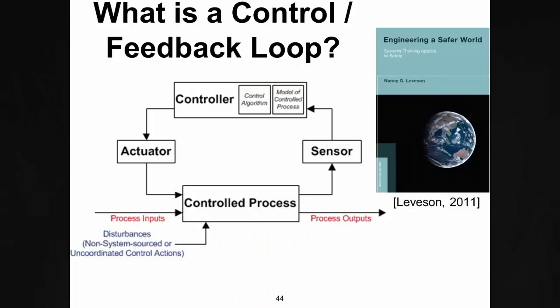A control feedback loop consists of a control process at the bottom and a controller in charge of that process. The controller interacts with the control process through actuators — some way of providing action — and receives sensory feedback via sensors. The controller itself consists of a model of the control process, representing how that process behaves and its states, plus a control algorithm which defines the controller's behavior and how it interacts with the control process.